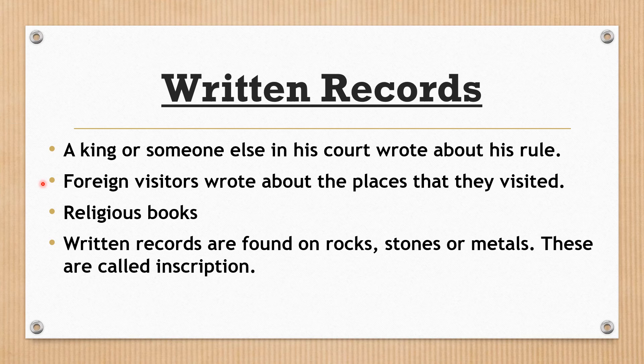Many visitors to India described the things that they saw, and their writings are an important source of information about Indian history. Religious books also give ideas of early times — for example, the Vedas is a Hindu religious book written by early people called the Aryans, and it helps us understand how the Aryans lived. Written records are also found on rocks, stones, or metals, and these are called inscriptions, which give historians important information.